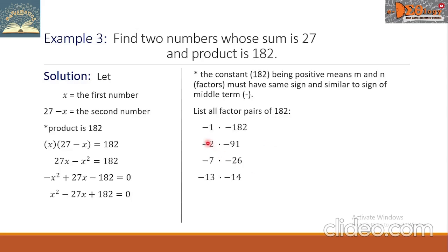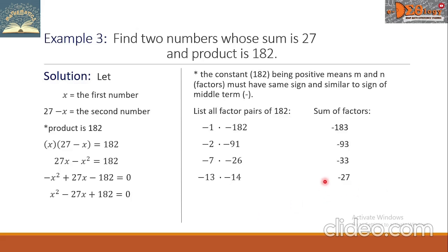Listing all negative factor pairs of 182: (-1) × (-182), (-2) × (-91), (-7) × (-26), (-13) × (-14). Getting the sum of each pair, we look in the sum column for -27 and find it corresponds to the factor pair (-13) and (-14).